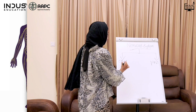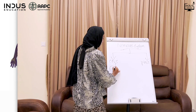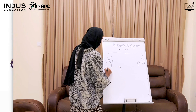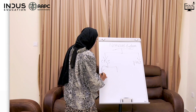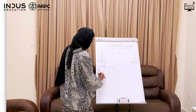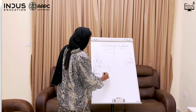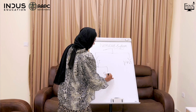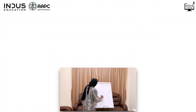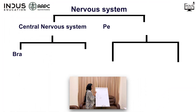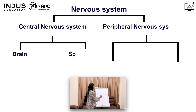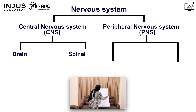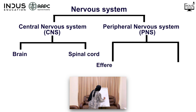The Central Nervous System is divided into two parts: the Brain and Spinal Cord.